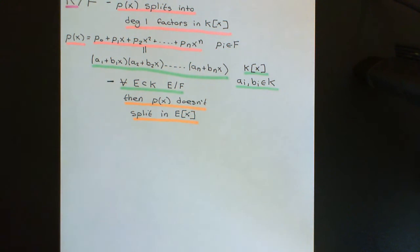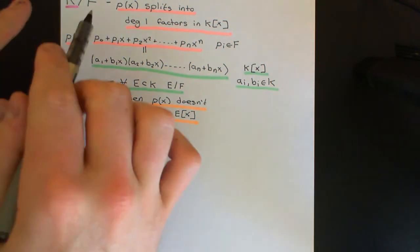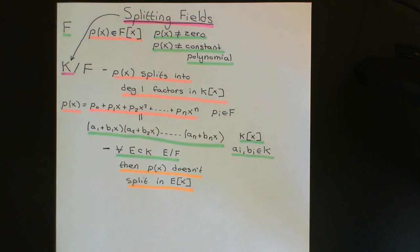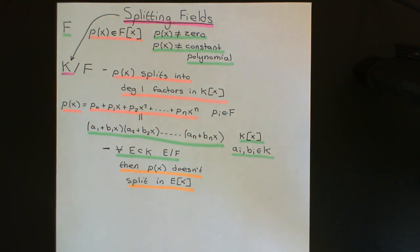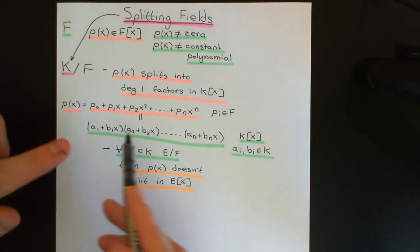Let's suppose we have proven existence and uniqueness of splitting fields. If we select some polynomial P of X in the ring of polynomials over field F and construct this unique splitting field, that's why people often talk about the splitting field for a polynomial P of X over the field F — not a splitting field — because it is unique. In this splitting field, the polynomial factors into degree one factors, often called linear factors.